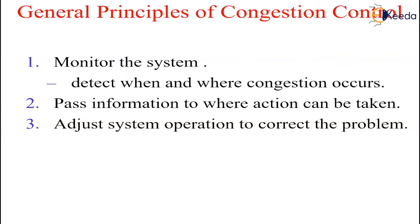The presence of congestion means that the load is greater than the resources that can handle it. Two solutions come to mind: increase the resources or decrease the load. For example, the subnet may start using dial-up telephone lines to temporarily increase the bandwidth between certain points. On satellite systems, increasing transmission power often gives higher bandwidth. Splitting traffic over multiple routes instead of always using the best one may also effectively increase the bandwidth. Finally, spare routers that are normally used only as backups can be put online to add more capacity when serious congestion appears.